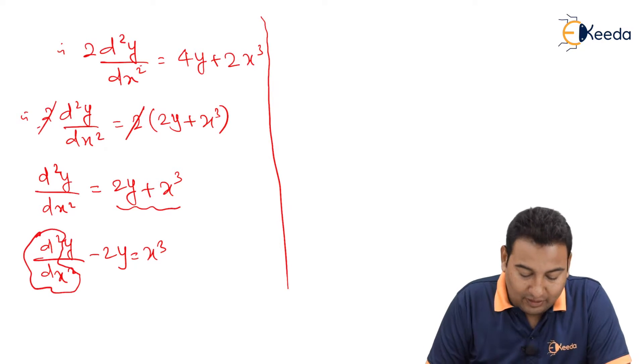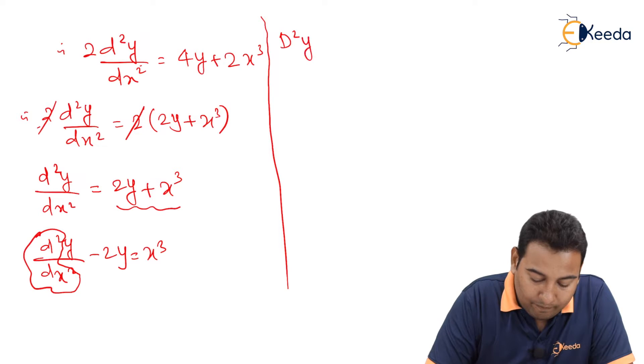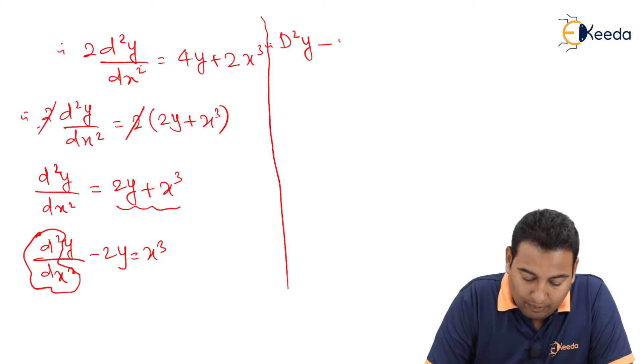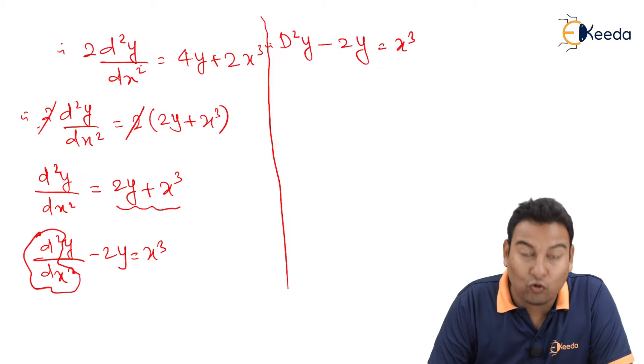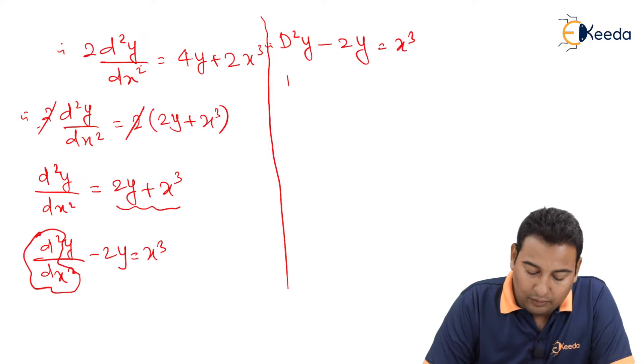We are going to replace this with a capital D square y minus 2y is equal to x cube. Let's take y common, therefore D² minus 2 times y is equal to x cube.